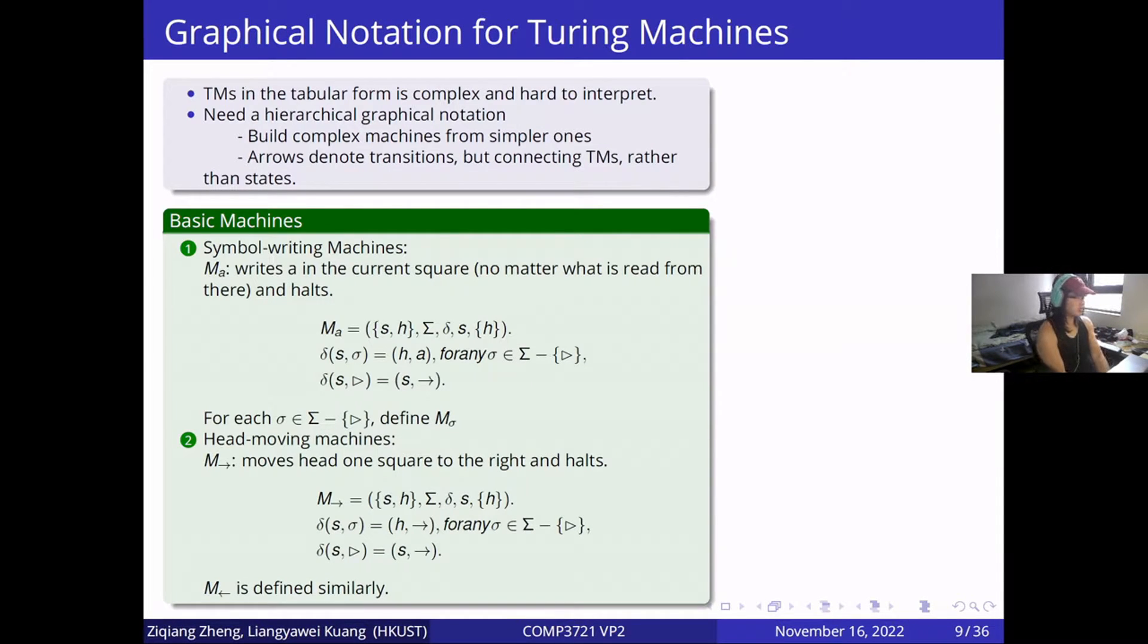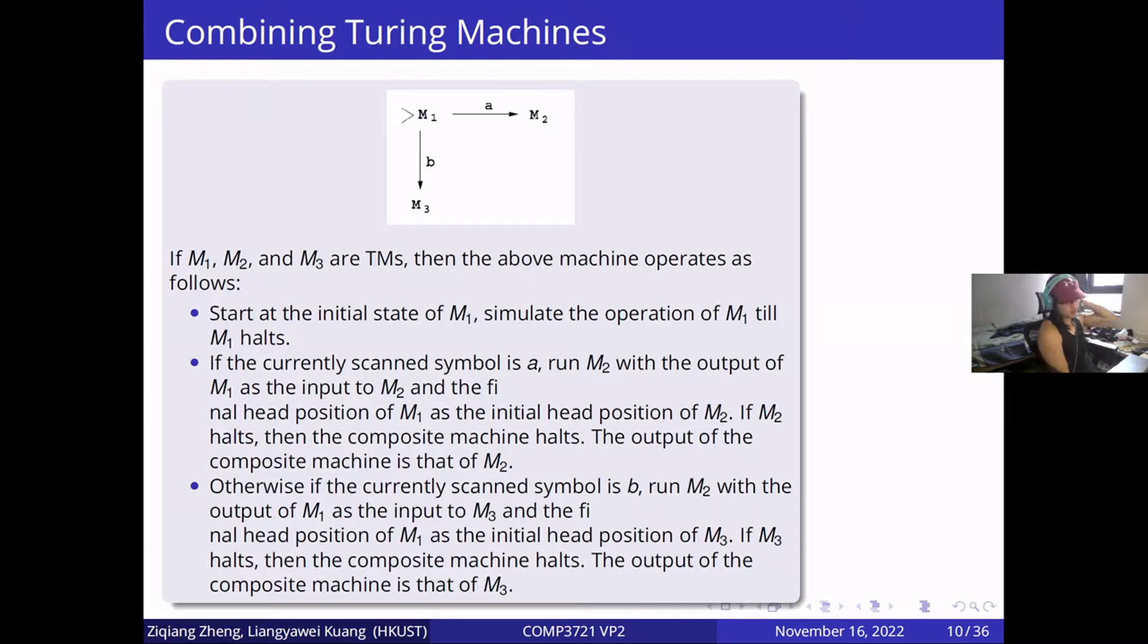Turing machines in tabular form are complex and hard to interpret. So we need a hierarchical graphical notation. We start with two kinds of basic Turing machines: simple writing machines and head-moving machines. Later, we need to combine Turing machines by designing the operation details which is shown below.